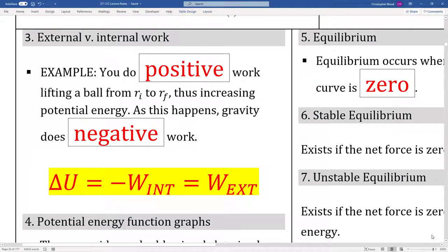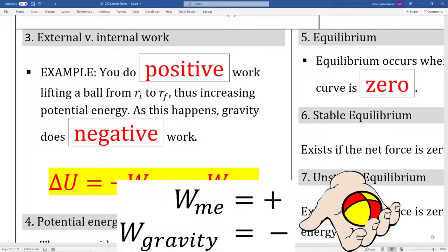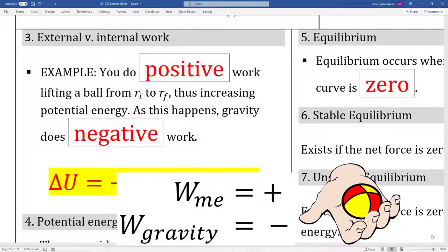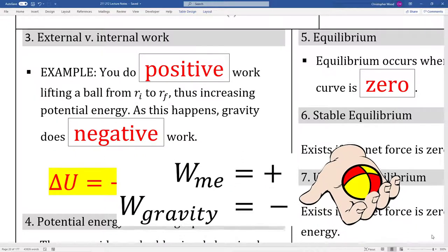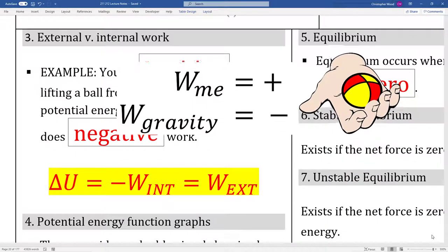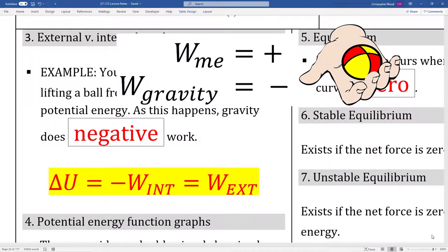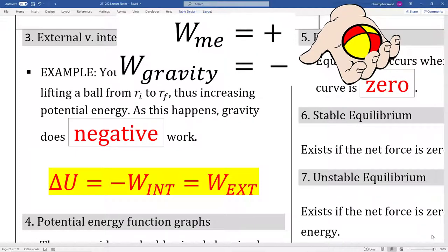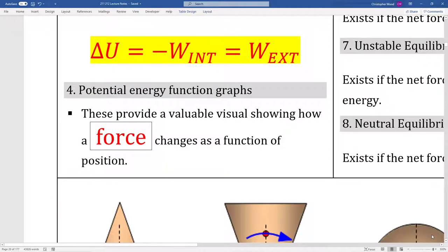Box three, make sure you're aware of external work versus internal work. For example, I'm doing positive work if I pick up a ball and move it up away from the Earth's surface. So in this case, I'm doing positive work and the gravitational potential energy is increasing, but the gravitational force itself is doing negative work. Box four is just a heads up for potential energy function graphs. It's very useful to see how force changes as a function of position. Depending on the specific graph, you'll use differential and integral calculus.